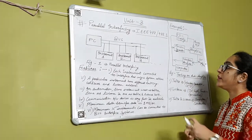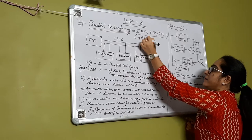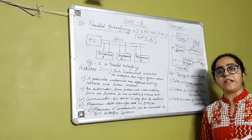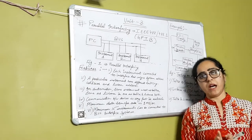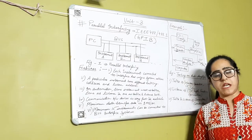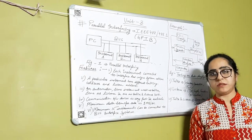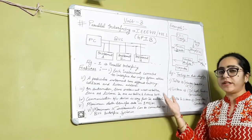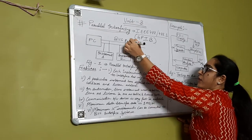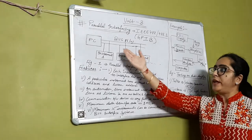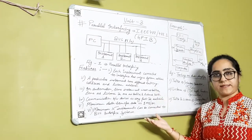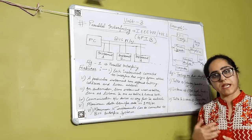IEEE 488 is also known as GPIB, which stands for General Purpose Interface Bus. The application of IEEE 488 is in automation, testing, and measurement. For that purpose, we need a computer with suitable configuration, measuring instruments which need to be monitored through the computer, a bus network through which communication can be done, and testing software through which testing of equipment can be done.